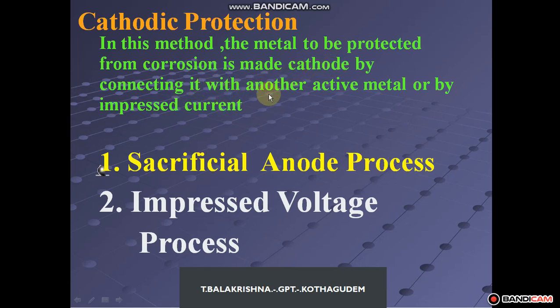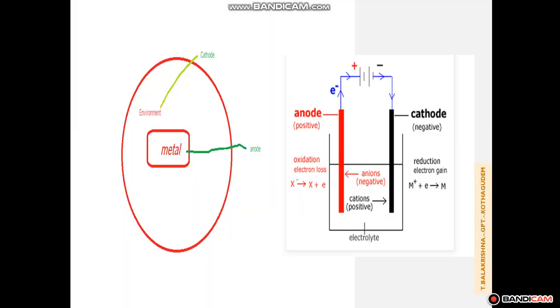In the previous part, the metal was connected to an active metal for cathodic protection. The metal is connected to the active metal — that is the sacrificial anode method of cathodic protection.